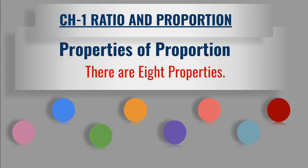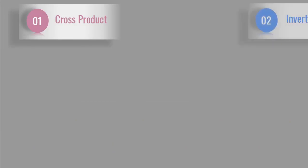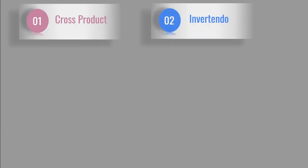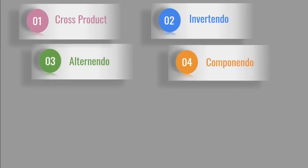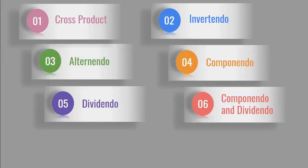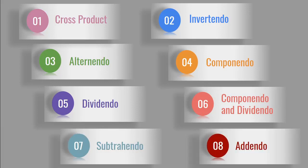There are 8 properties of proportion. First one is cross product property. Second is invertendo property, alternando property, componendo, dividendo, componendo and dividendo, subtrahendo and addendo. Now we will learn all the properties individually.